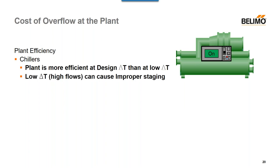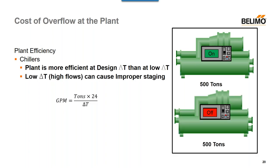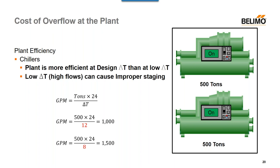This also affects the plant. The plants are going to be responding to what's happening at the coils, so we want to address it at the coil first. The plant is more efficient at design than at low Delta T. Low Delta T causes increased flow and a higher hydronic requirement that could include additional chillers coming on. For example, with two 500-ton chillers, at the design Delta T of 12 degrees we need 1,000 GPM to maintain the loop. But if Delta T depresses from 12 degrees to 8 degrees, we now exceed that GPM requirement and have to bring on another chiller — meaning additional cooling fans, cooling towers, and more energy used unnecessarily, when we could have served that load with one chiller.